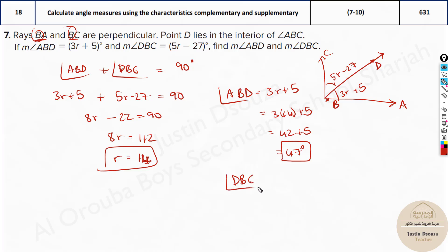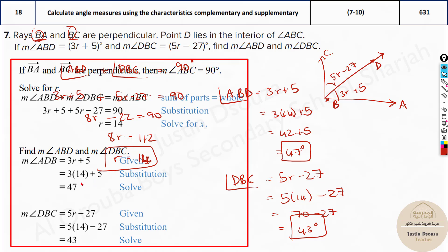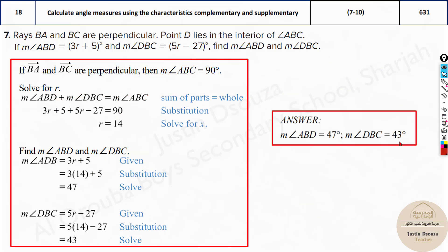We know DBC is equal to 5r - 27 degrees. So 5 times 14 minus 27. So 14 times 5 is 70 minus 27, we have 50 minus 7 is 43 degrees. And yes, 90 minus 47 is also 43 degrees. So this is how we solve this particular problem. Make a rough diagram, then understand what is given and then solve it up. So r is 14, then we got 47 and 43. That is the answers.